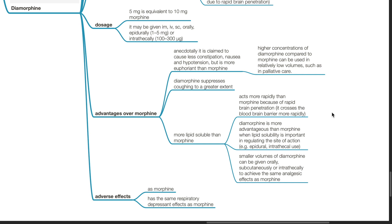Diamorphine is more advantageous than morphine when lipid solubility is important in regulating the site of action, such as during epidural or intrathecal use. Smaller volumes of diamorphine can be given orally, subcutaneously, or intrathecally to achieve the same analgesic effects as morphine.